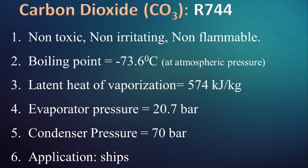Carbon dioxide is a non-toxic, non-irritating and non-flammable gas. It has a boiling point of minus 73.6 degree Celsius at atmospheric pressure. Because of this very low boiling point, for evaporation at minus 15 degree Celsius, we need a pressure of 20.7 bar in the evaporator, and for condensation at 30 degree Celsius, we need 70 bar pressure in the condenser, which is very high. Hence, the system has to work under high pressure and it makes it less efficient.